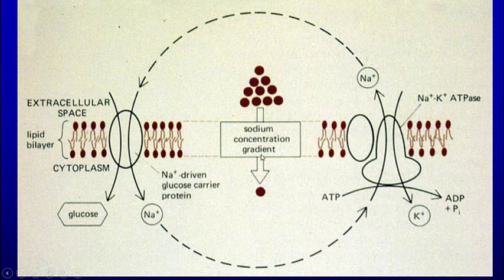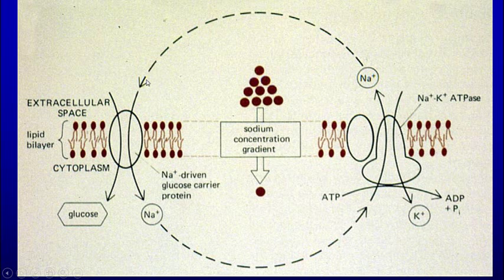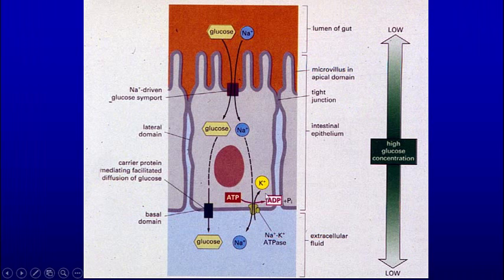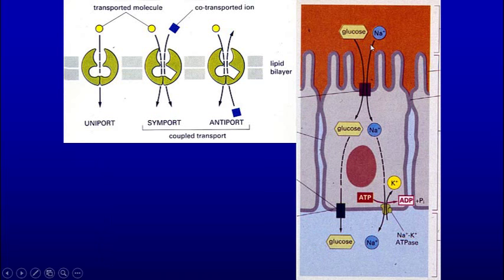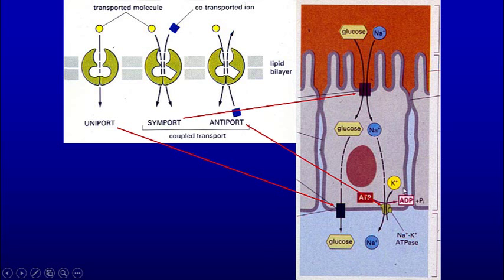Sodium is pumped out so there's more sodium outside than inside. Sodium can then be used in a symport to bring glucose in. To bring glucose in, you need sodium, and then you need to pump sodium out at a different location — going against the concentration gradient. We see this in an intestinal absorptive cell: sodium pumps are at the basolateral border, and the symport for glucose is at the apical border. The uniport then allows glucose to exit down its concentration gradient.